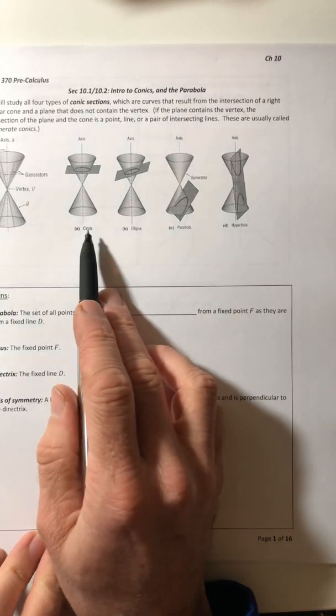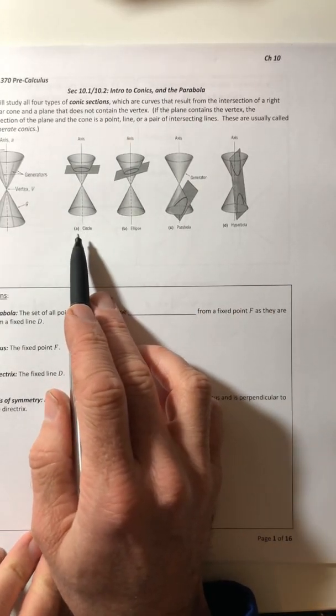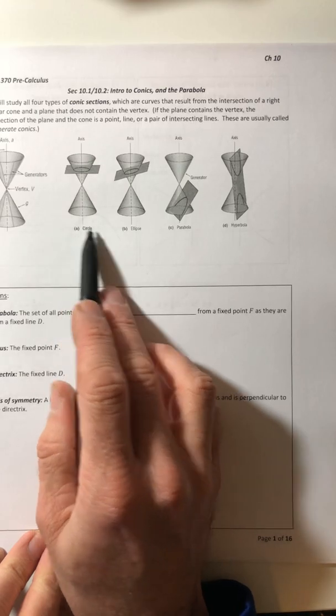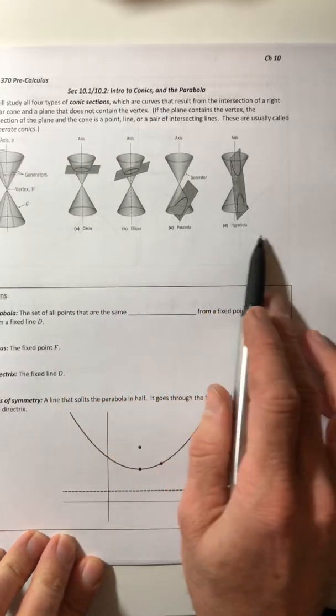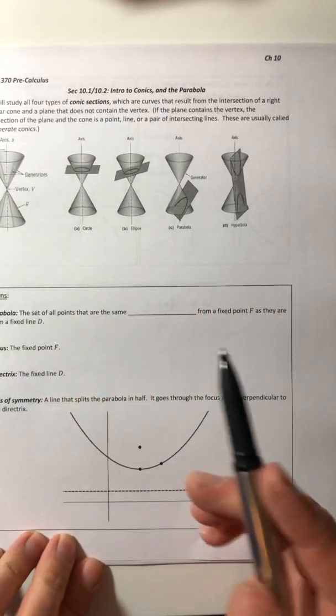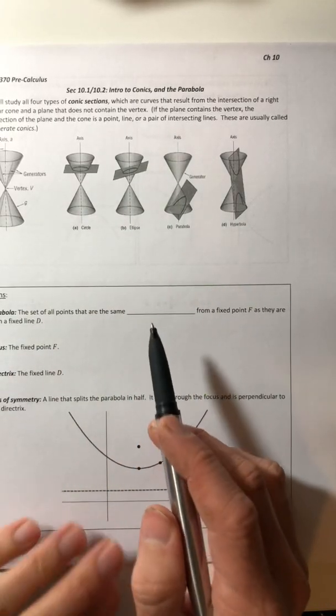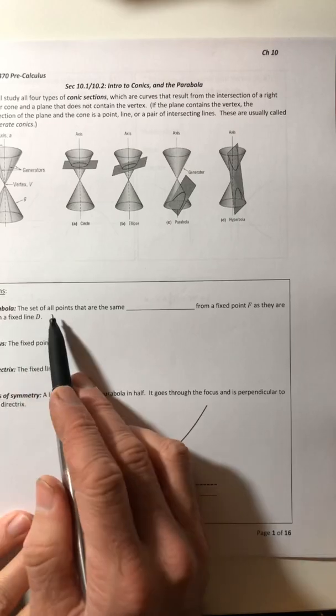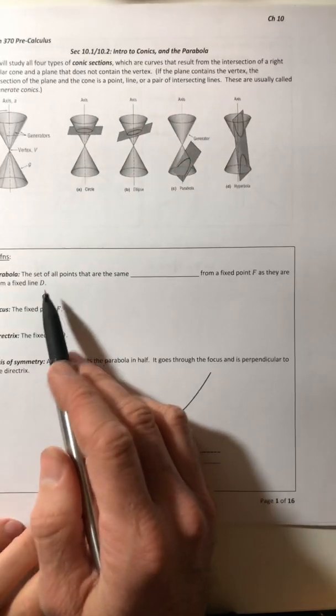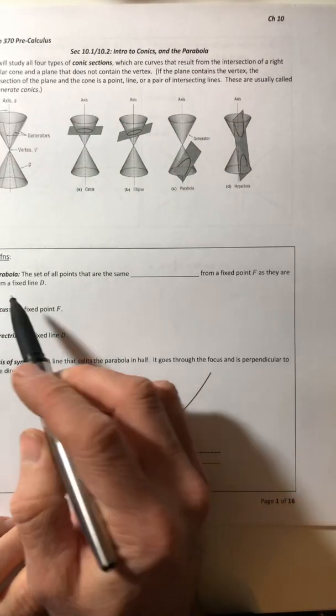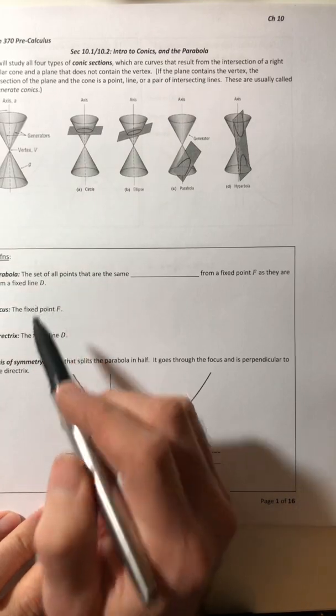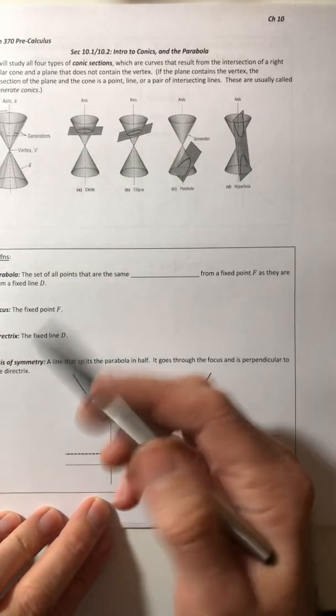So we're going to be looking at each one of them. We've already done the circle, that was way back in chapter one. So that one's already done. So we're just going to be looking at these three in the next three sections. So we're going to do the parabola first. A parabola, like we all know what it looks like and how to draw them, but we've never really seen the formal definition of it, at least not in this class.